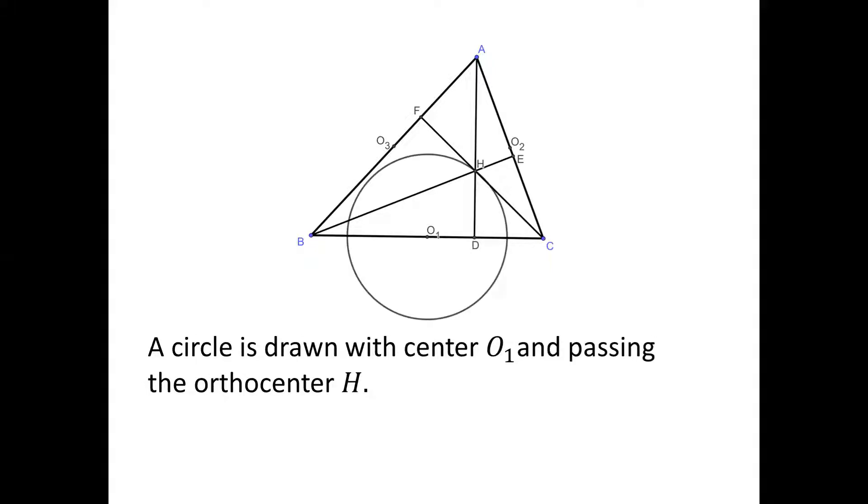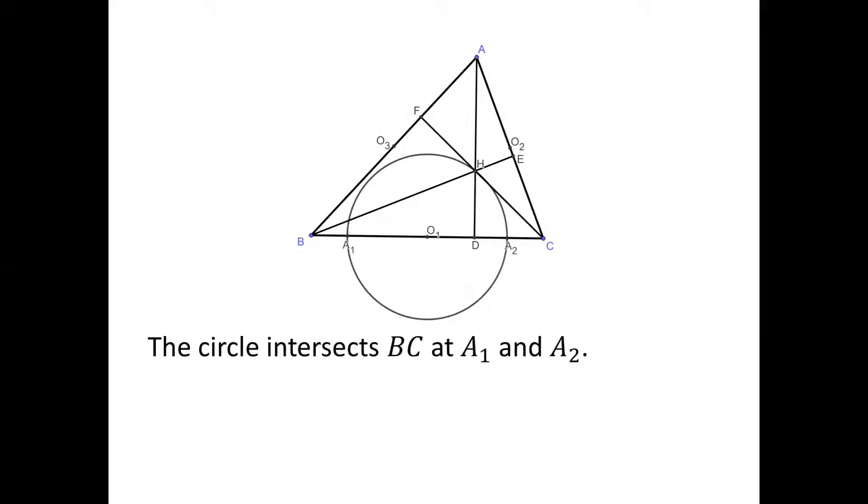We draw a circle with center O1 and passing through the orthocenter H. Then the circle intersects BC at A1 and A2.